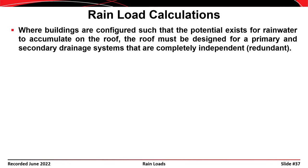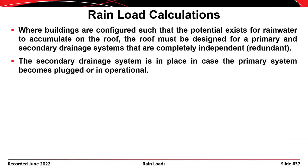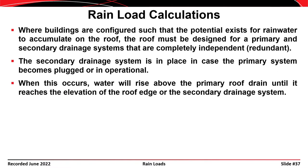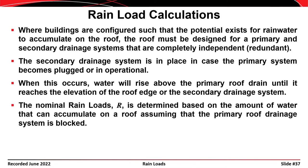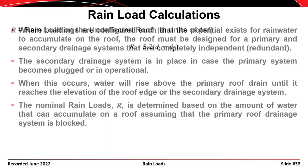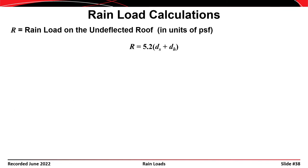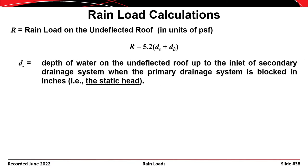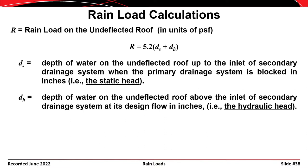When buildings are configured such that rainwater could accumulate, they must be designed for two independent drainage systems — primary and secondary. The secondary system is in place in case the first becomes plugged. When that happens, water rises above the primary drain until it reaches the elevation of the secondary drain. The rain load R is essentially the weight of the water that accumulates assuming the primary drain is plugged and water must rise to the secondary drain elevation.